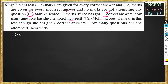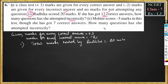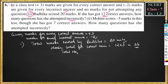Given: marks for every correct answer = +3, marks for every incorrect answer = −2. Total marks scored by Radhika = 20, and she scored 12 correct answers. Marks scored for correct answers = 12 × 3 = 36 marks. Total marks = marks for correct answers + marks for incorrect answers.